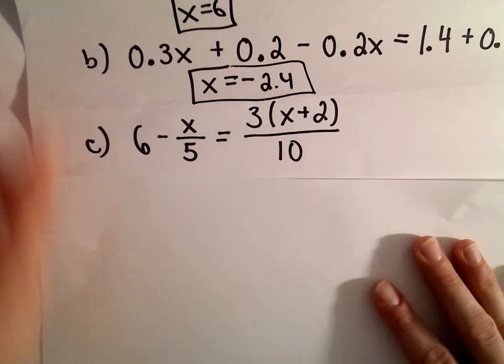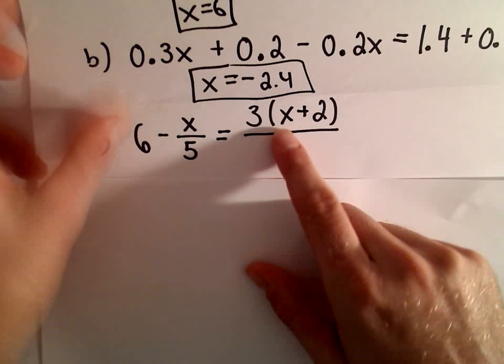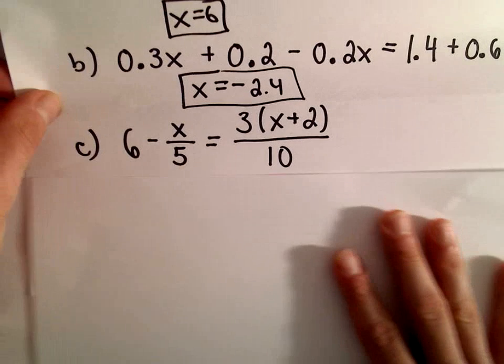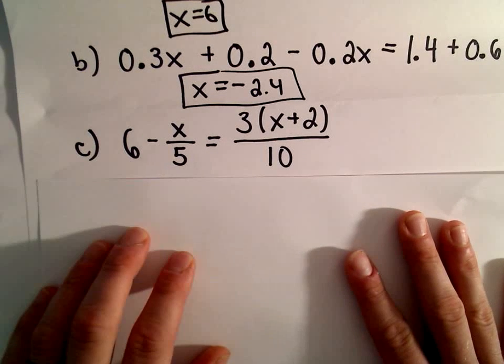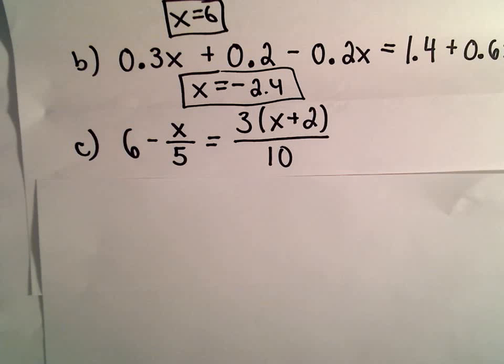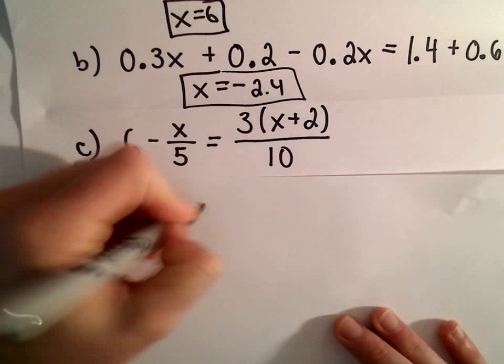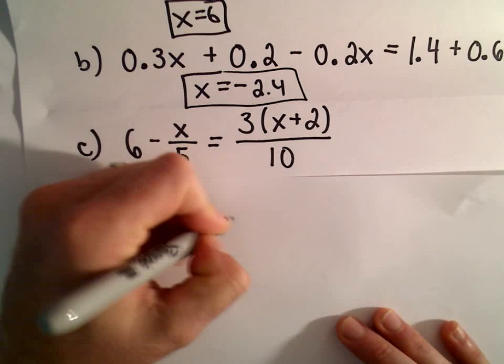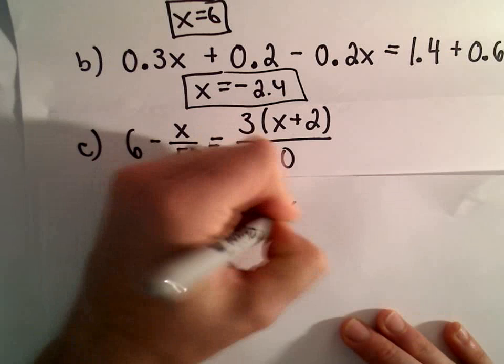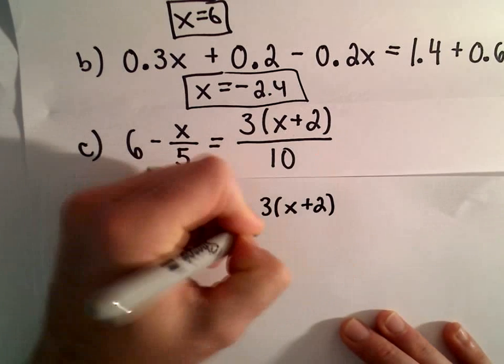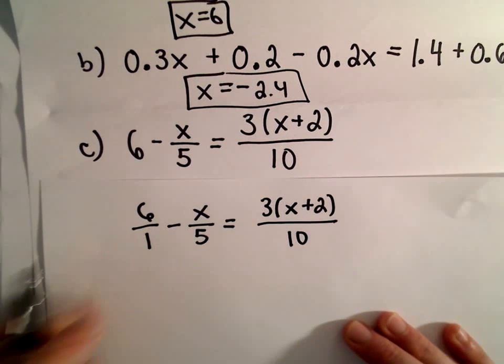We could start distributing out in the numerator. We could break up the fraction. We could do lots of things here. Typically, I think the easiest thing to do, if you have fractions, is just to multiply both sides of the equation by something that will get rid of the fractions.